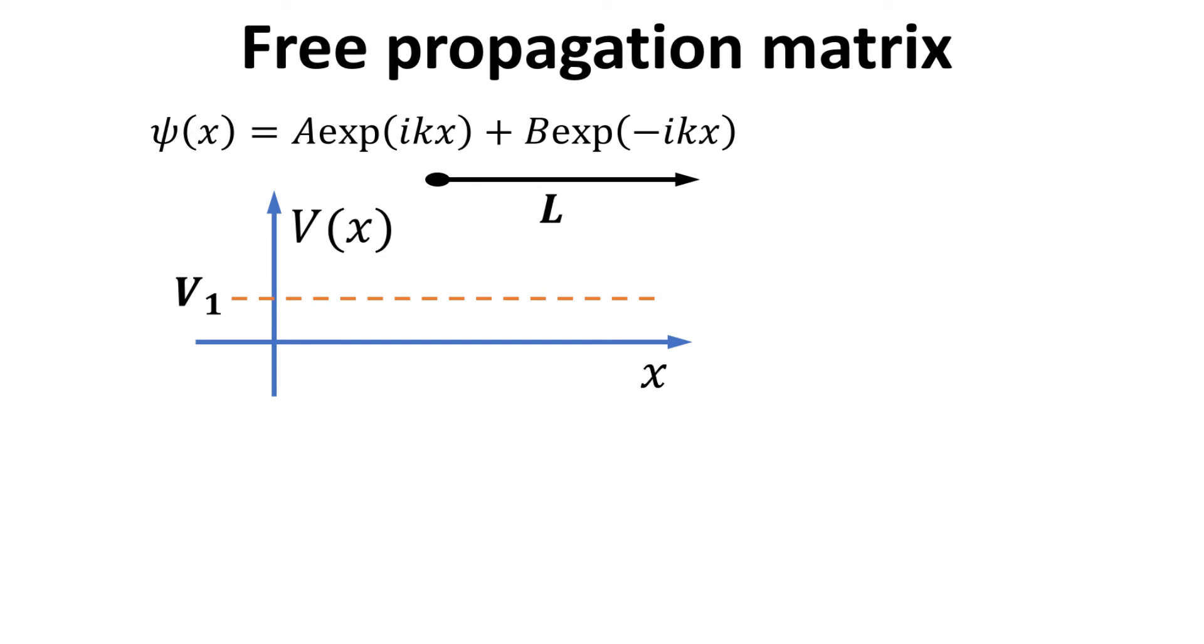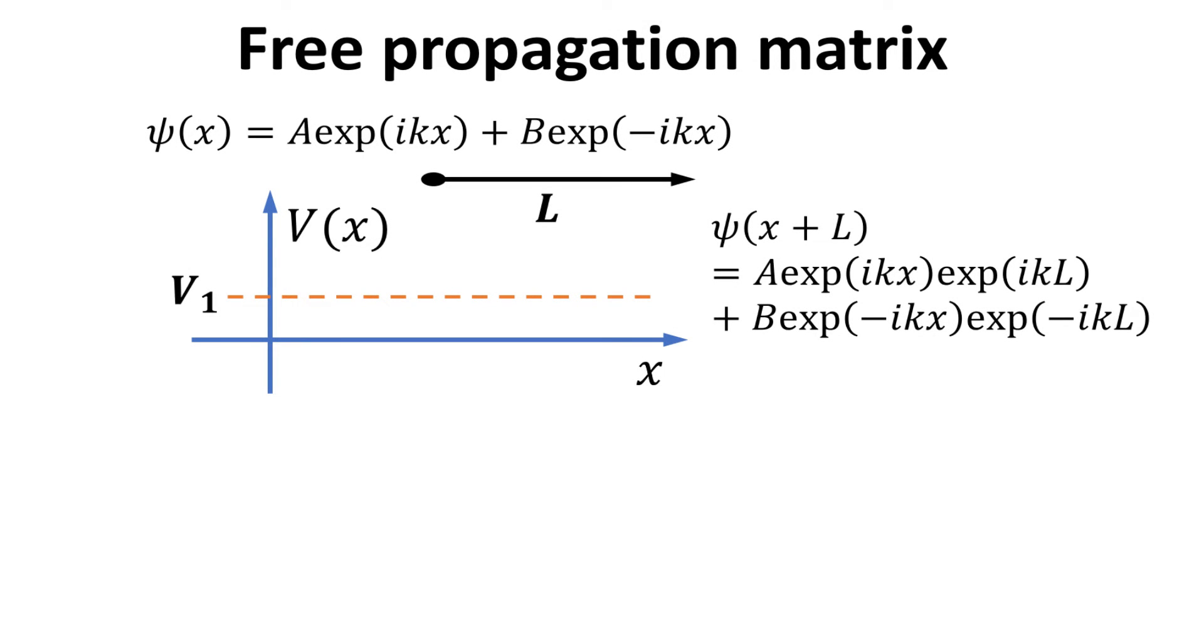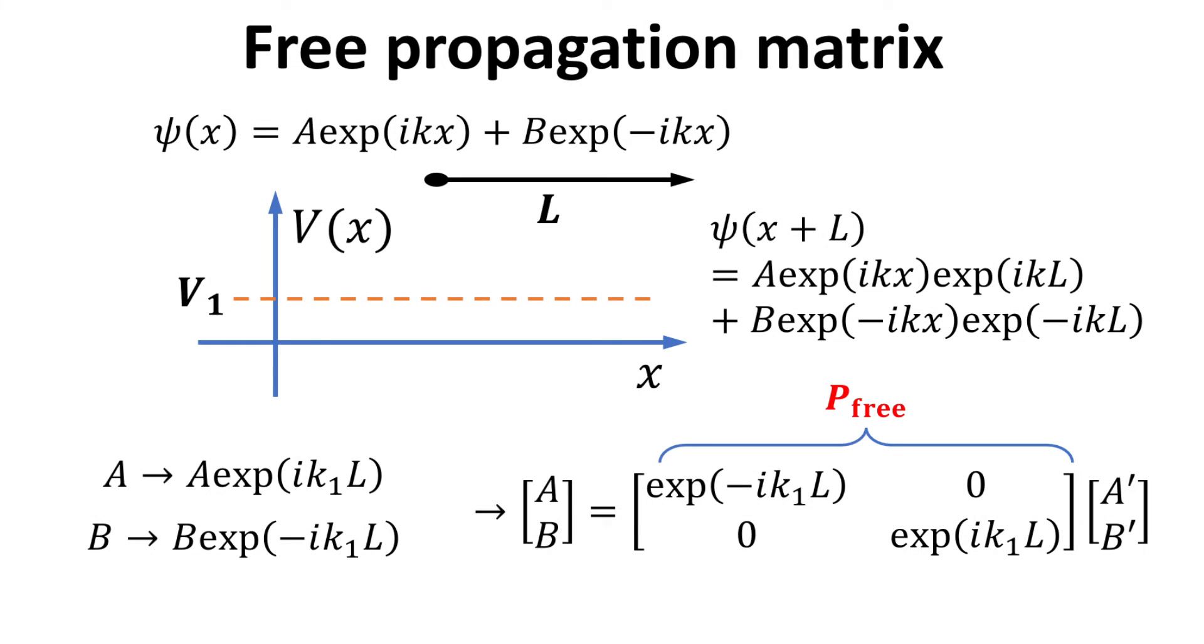How about the simple case of mere free propagation of the wave for a distance L? In this case, there is no potential step, so the wave vector k would not change. We simply incur a phase given by exponential plus or minus ikL, depending on whether it is propagating in the forward or backward direction. Thus, we see that the action of free propagation just incurs a phase factor to the scattering amplitudes as shown, and we can again express the scattering amplitudes vector before and after propagation in terms of a propagation matrix, herein denoted as the free propagation matrix.